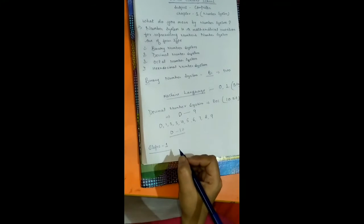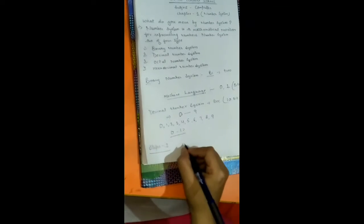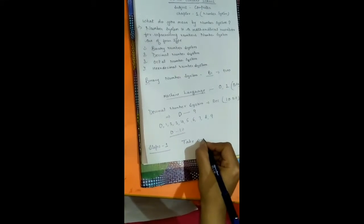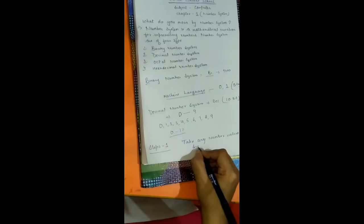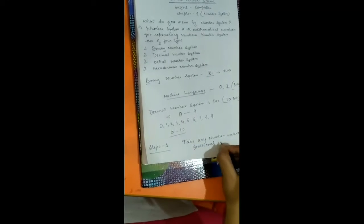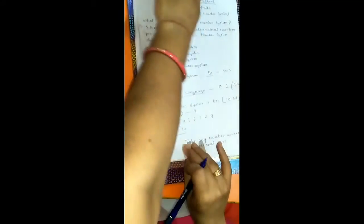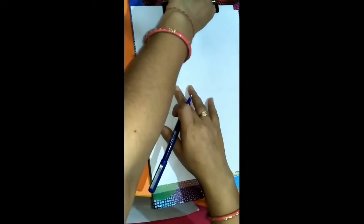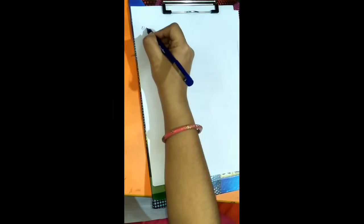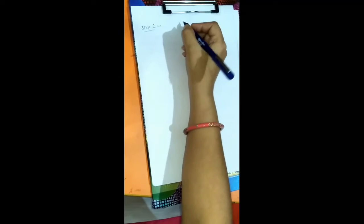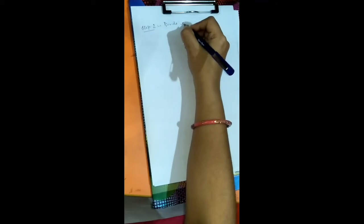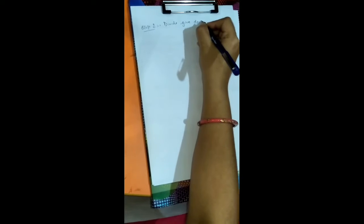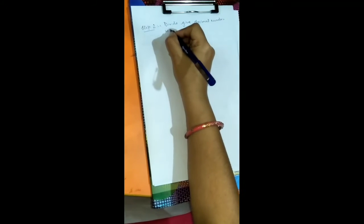Step one: Take any number without a fractional part. Step two: Divide the given decimal number by the base, which is 2.